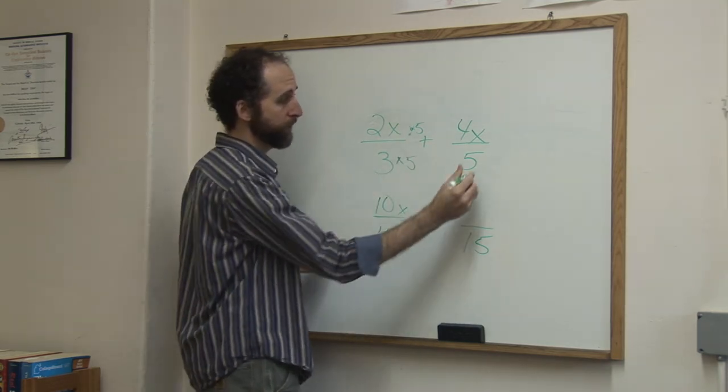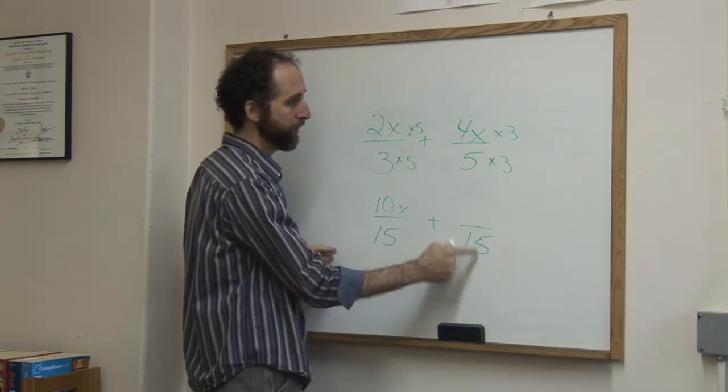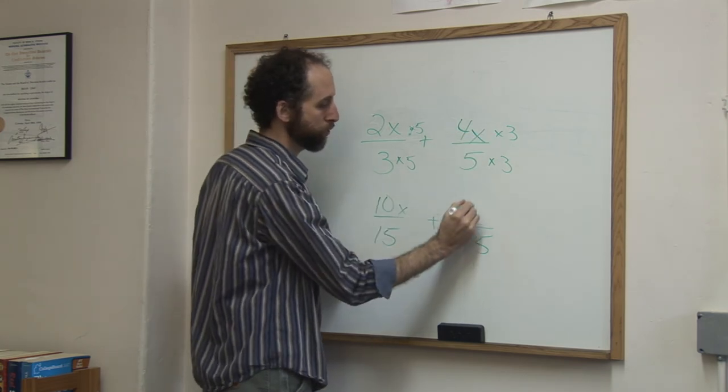5 times what is 15? The answer is 3, so we multiply the top by 3 as well. 5 times 3 is 15. 4x times 3 is 12x.